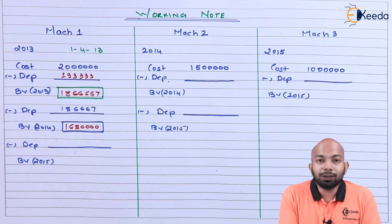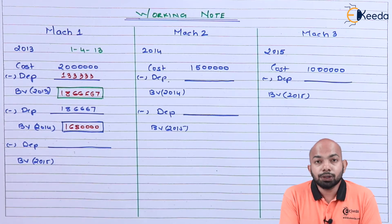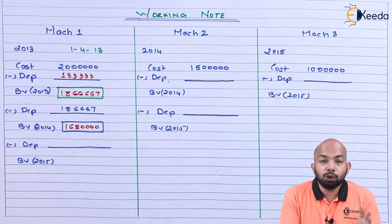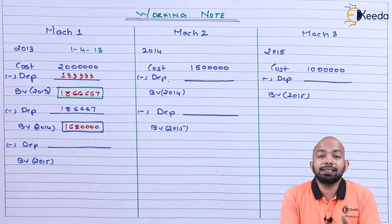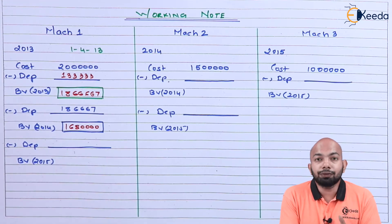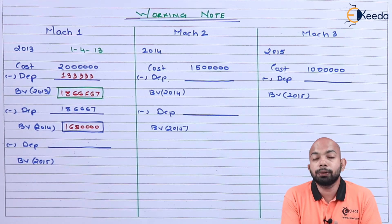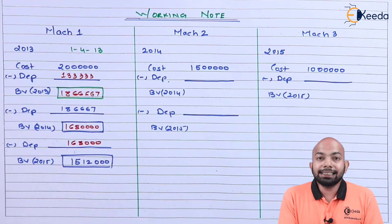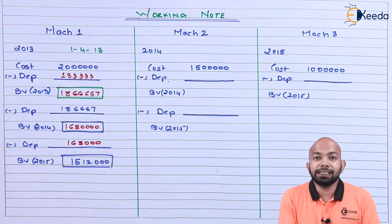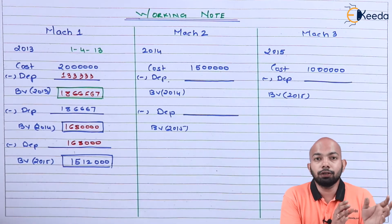For the next year depreciation calculation, we use 16,80,000 to calculate 10% on it. Since this machine was sold out in December 2015 — the last month — we calculate depreciation for the whole year, that means 12 months. So 16,80,000 multiplied by 10% gives the depreciation. After subtracting, the final book value of Machine 1 for the year 2015 is 15,12,000. This marks the closure of the working for Machine 1.